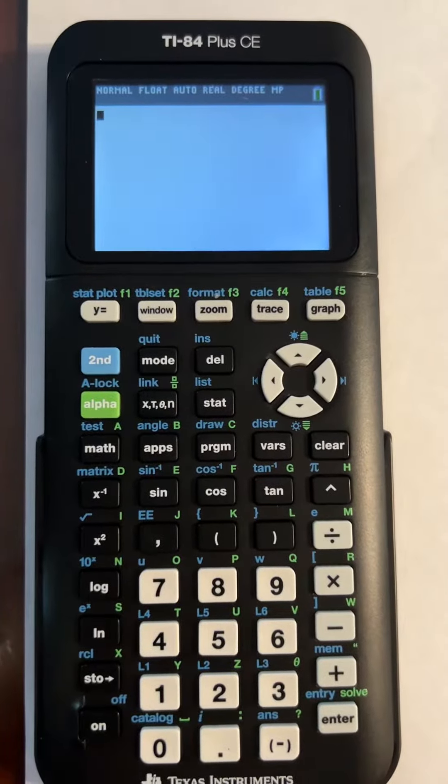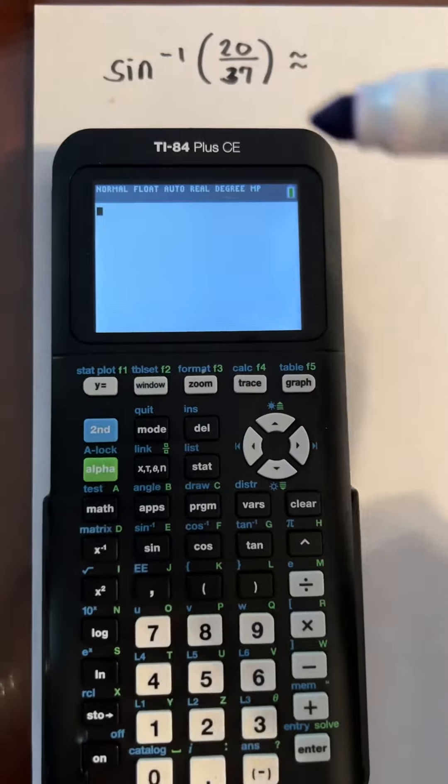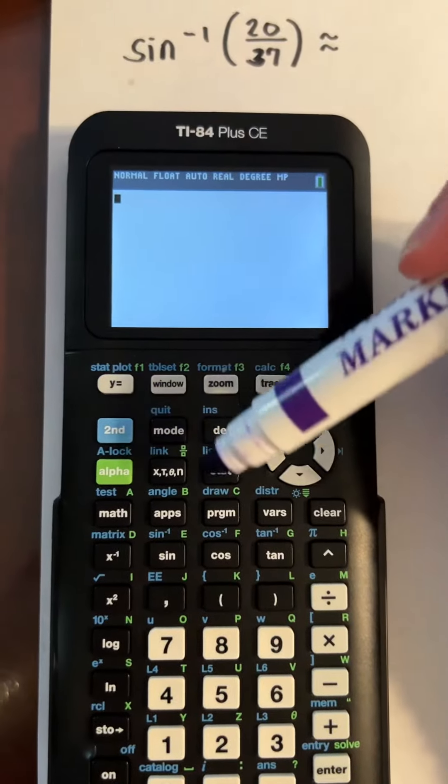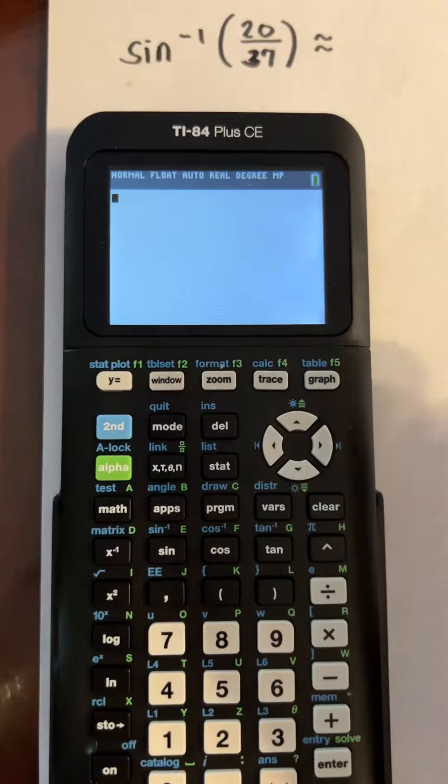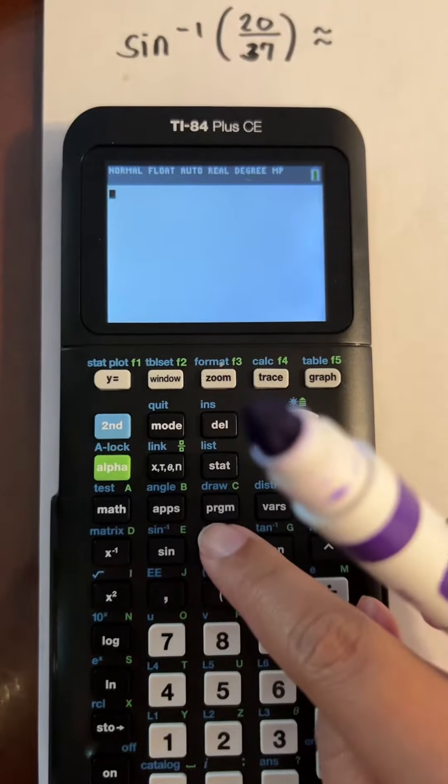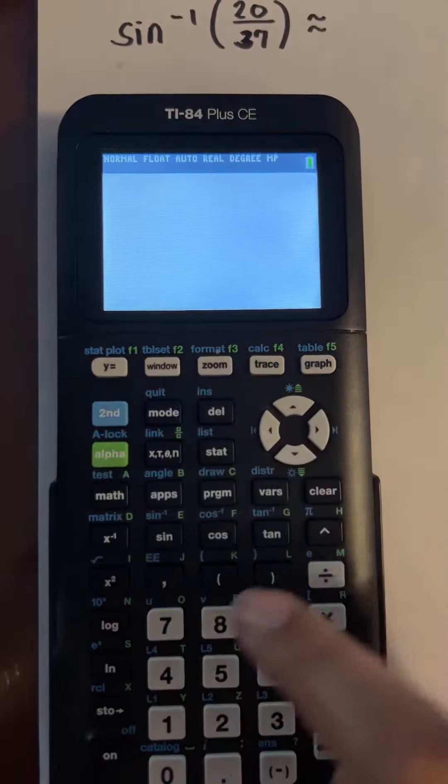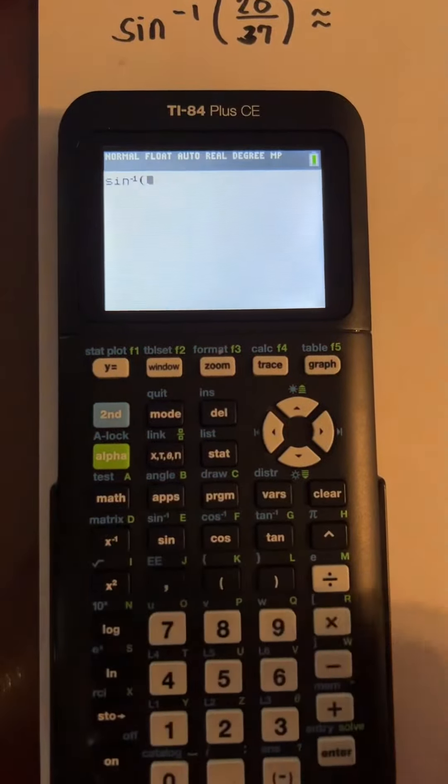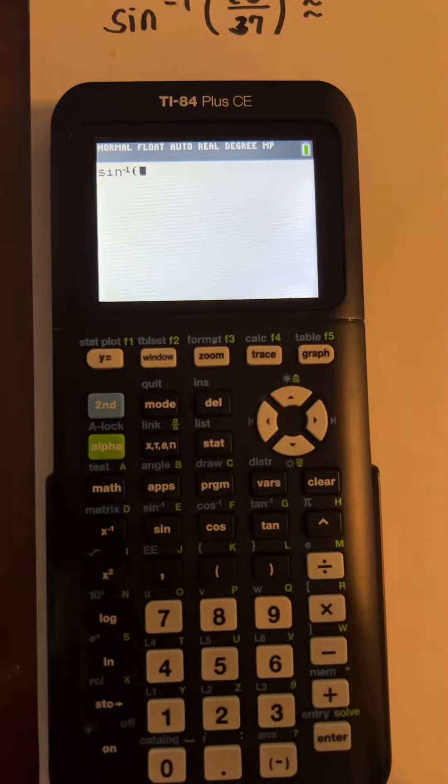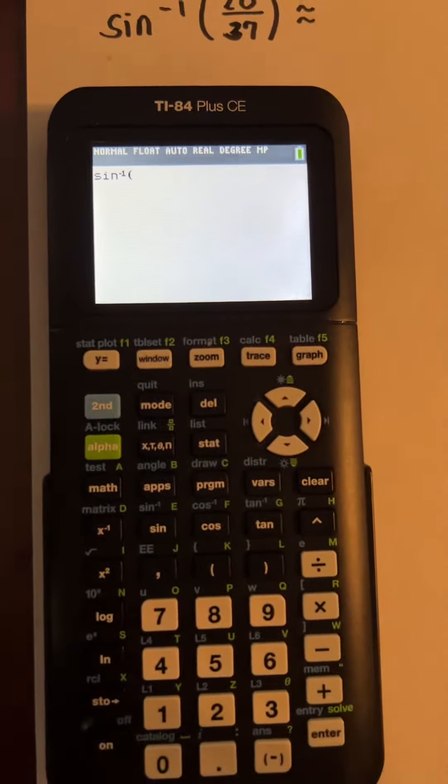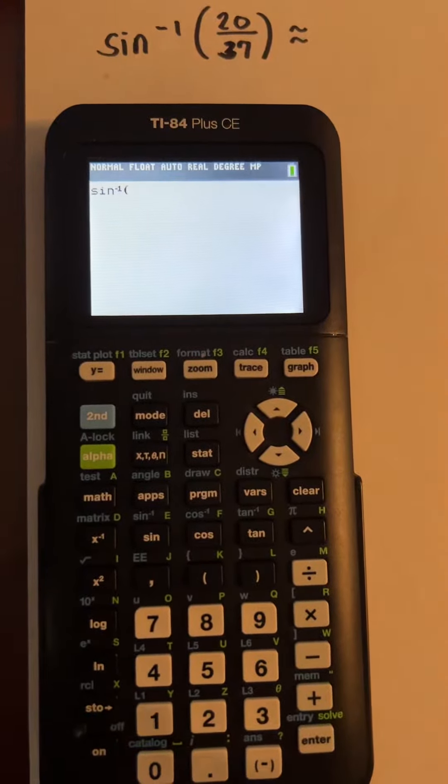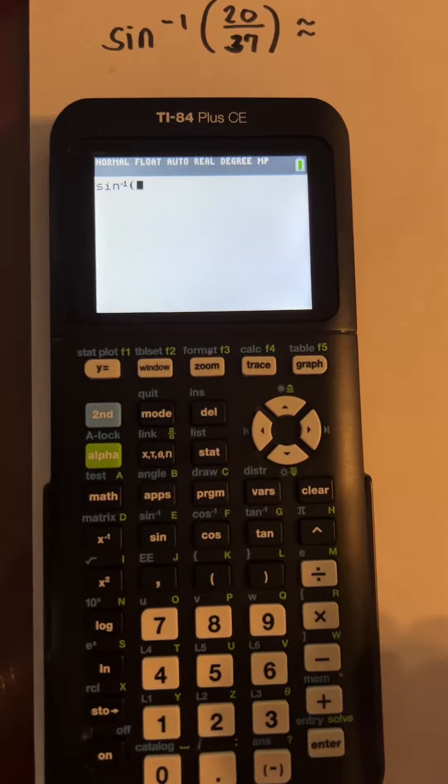Since we're going to find sine, we're going to click sine, but before that, since we're finding inverse, you go second and then sine. So there you go, you have now sine inverse. The negative one in there stands for sine inverse, or inverse of sine. And then you enter 20 over 37.